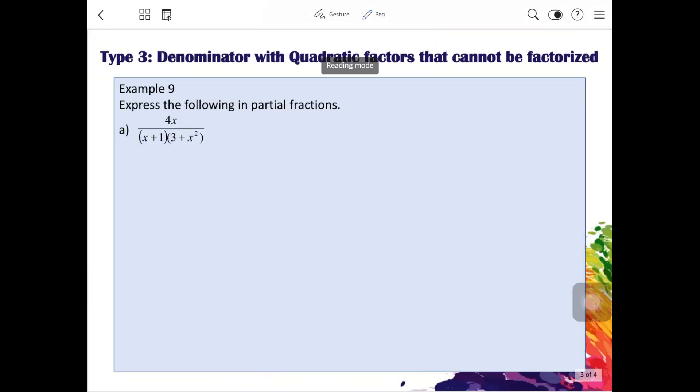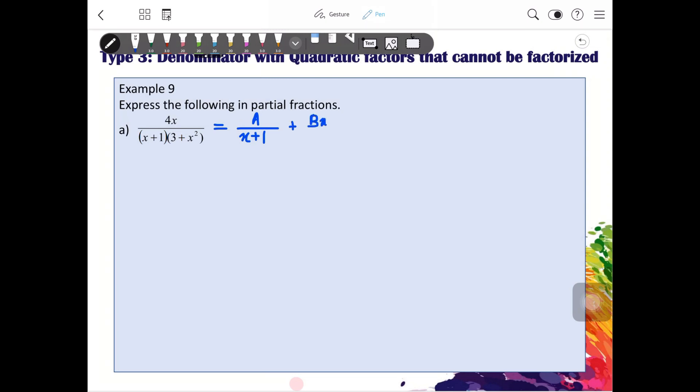Let's look at one example. When you have this question, you can see that actually x squared plus 3 cannot be factorized. It's either you get imaginary root or some decimal places. So what we're gonna do right here, we will write A over x plus 1 plus Bx plus C, and then we write x squared plus 3.